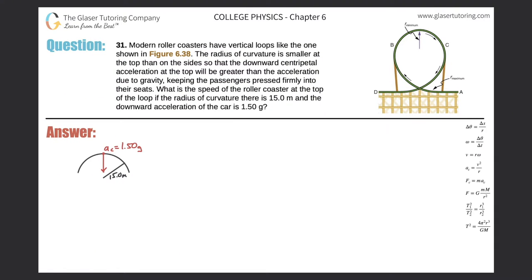Number 31. Modern roller coasters have vertical loops like the one shown in figure 6.38. The radius of curvature is smaller at the top than on the side so that the downward centripetal acceleration at the top will be greater than the acceleration due to gravity, keeping the passengers firmly pressed into their seats.